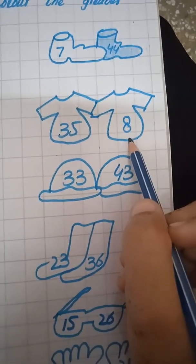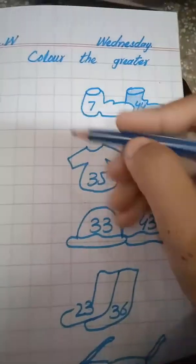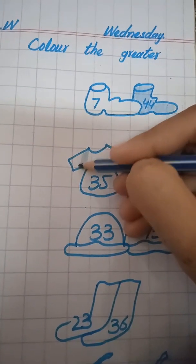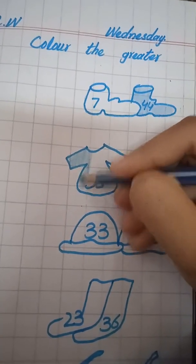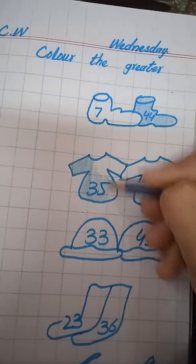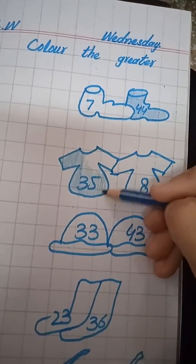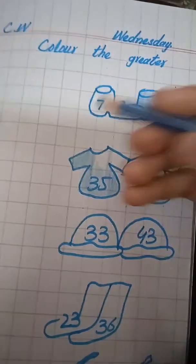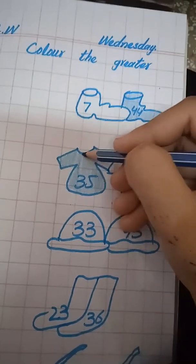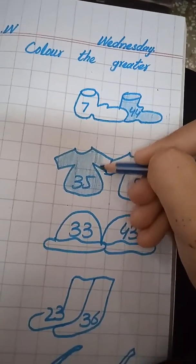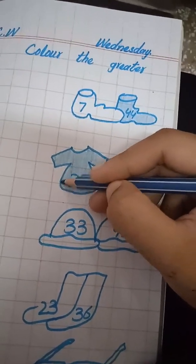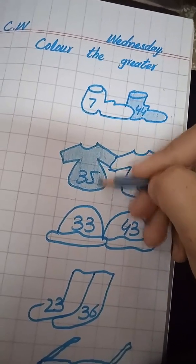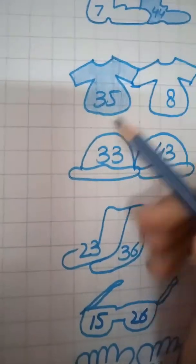Now look at these charts. This number is 35 and this number is 8. So which number is greater, students? 35. Color the shirt of 35. Do it carefully.